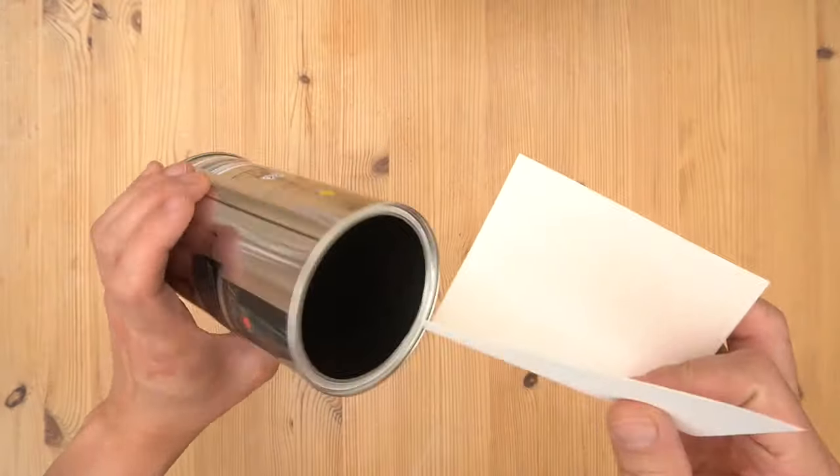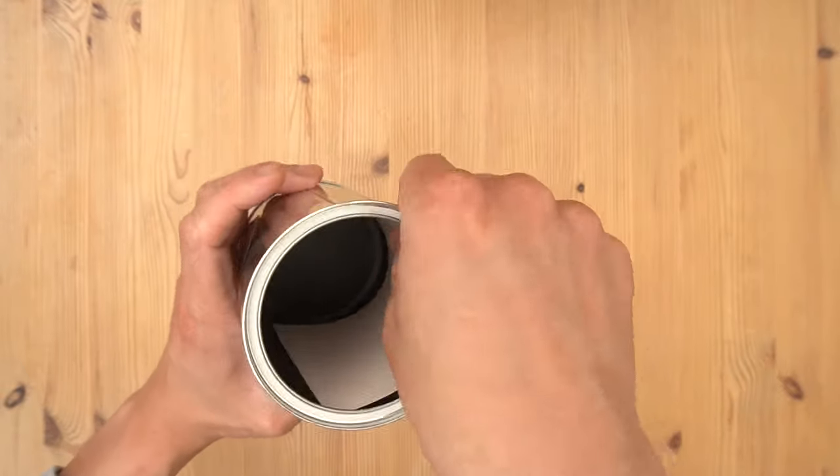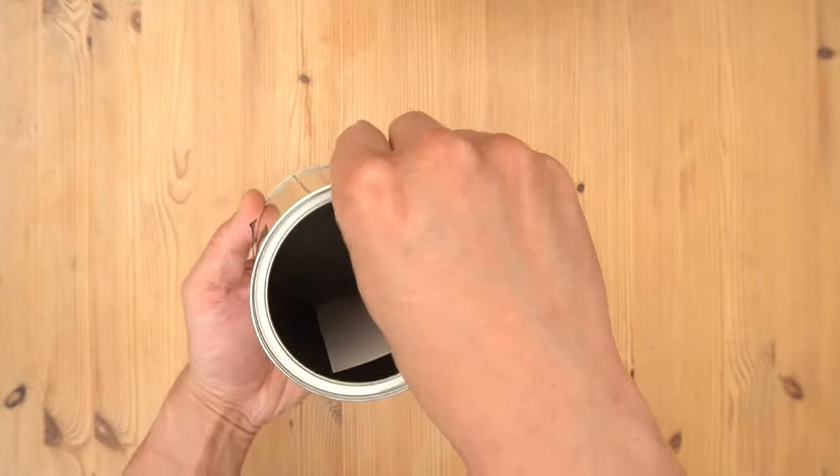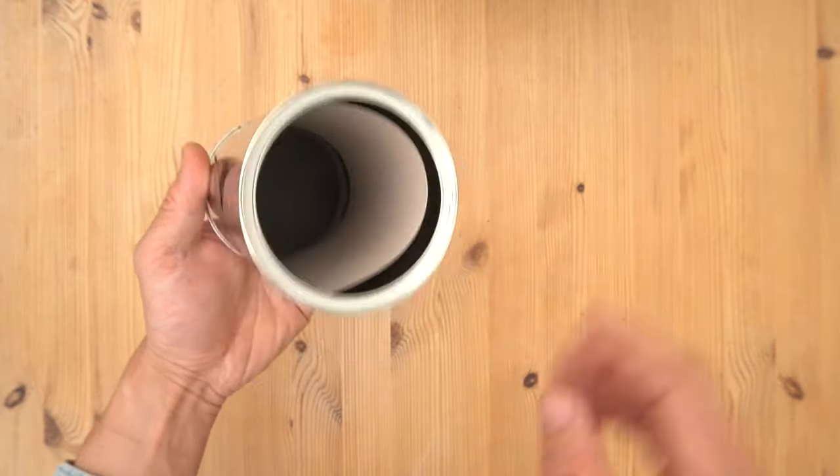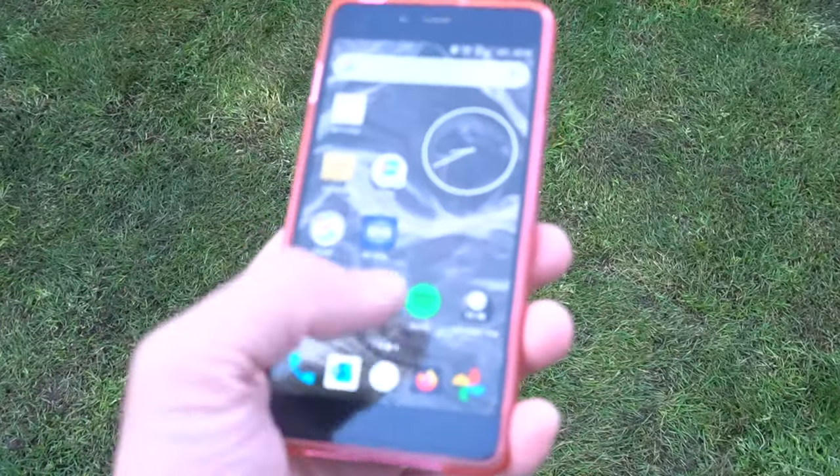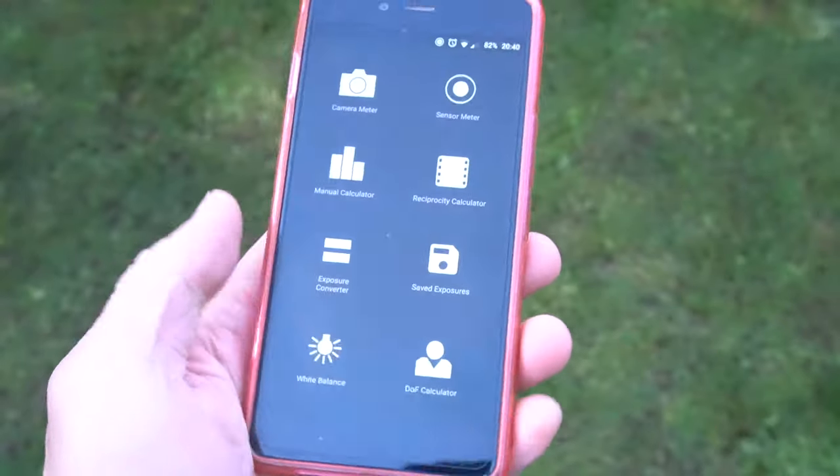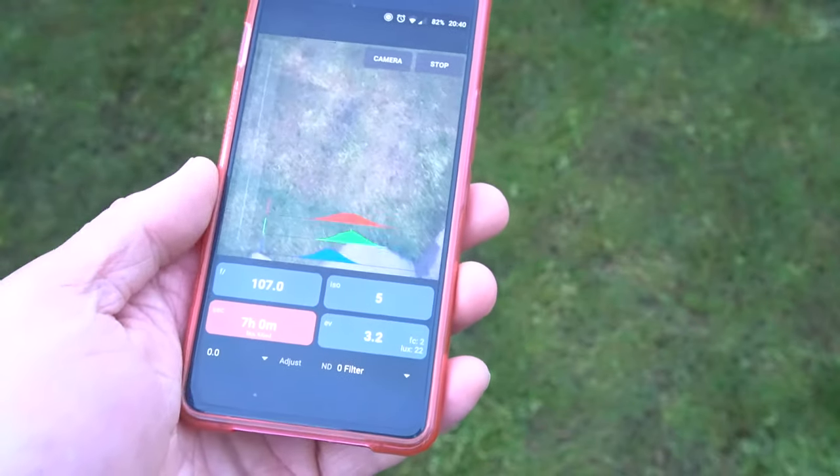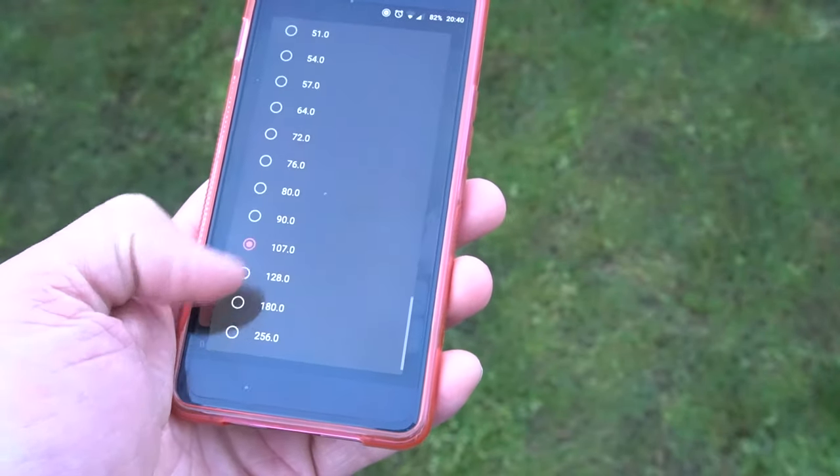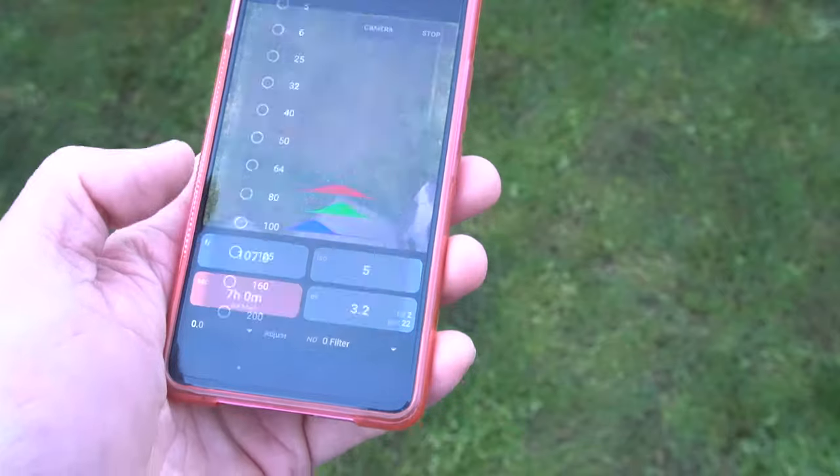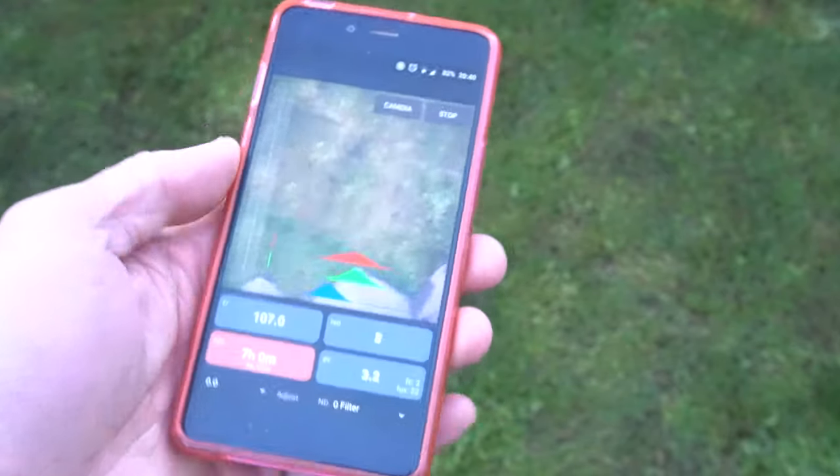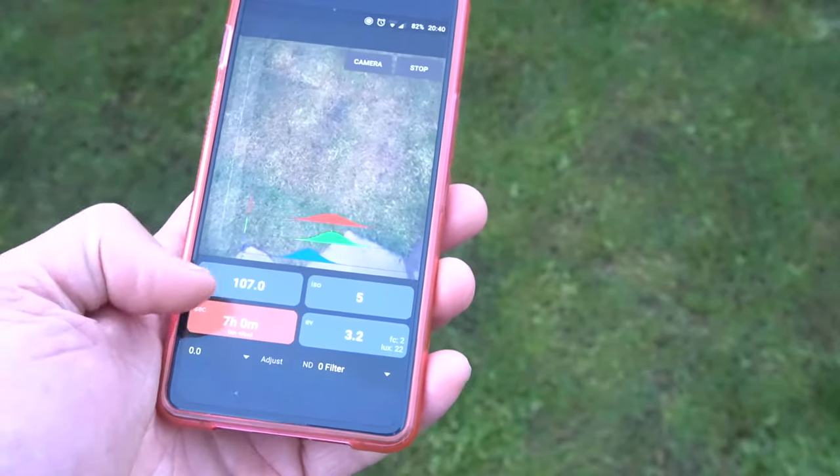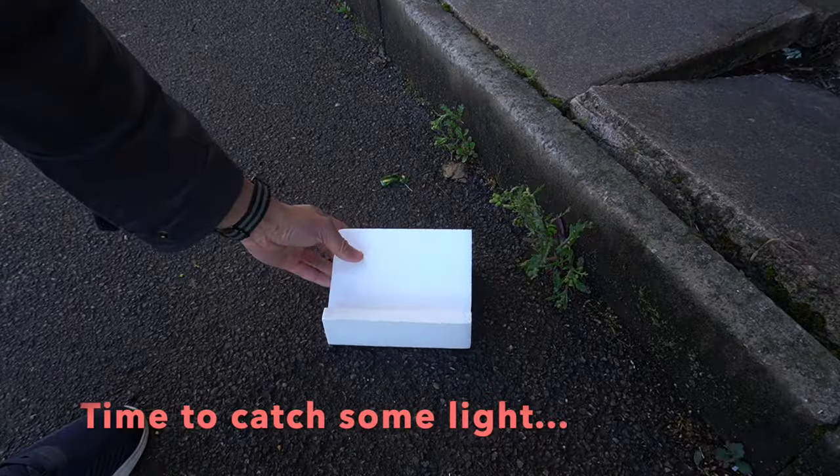Before going out I wanted to test fit the paper into the camera so I knew that it would fit okay. For light measuring I downloaded an app called Light Meter and it's very user friendly. You set the f-stop and then you set the ISO and then it calculates how long the exposure needs to be.